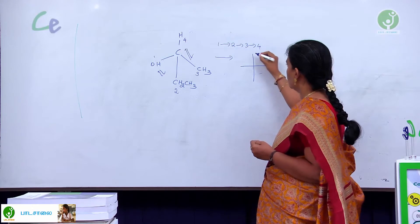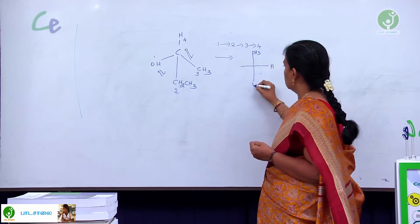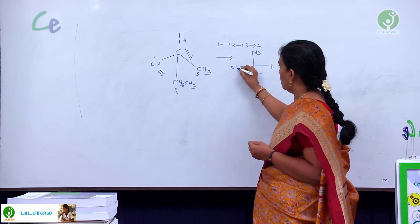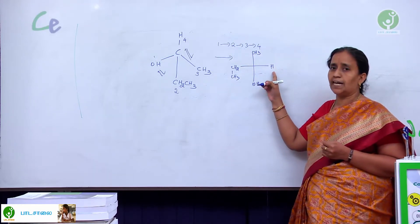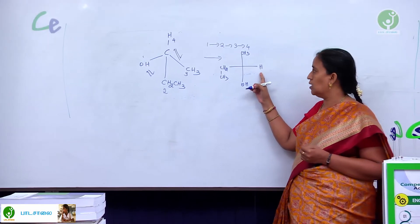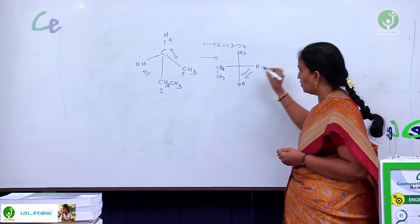The first thing is I am exchanging. So, CH3. This comes to OH. This comes to CH2CH3. Now, still my fourth atom is at the side only. It is not at the bottom. So, do one more time the rotation.